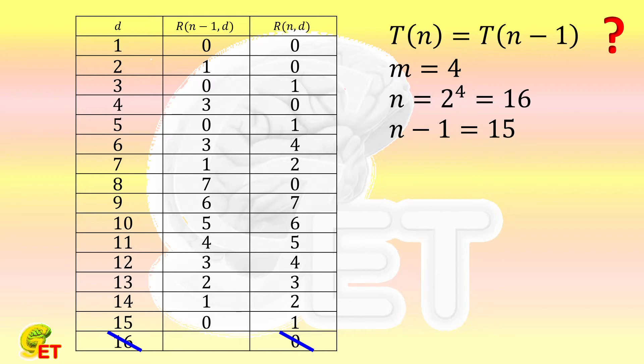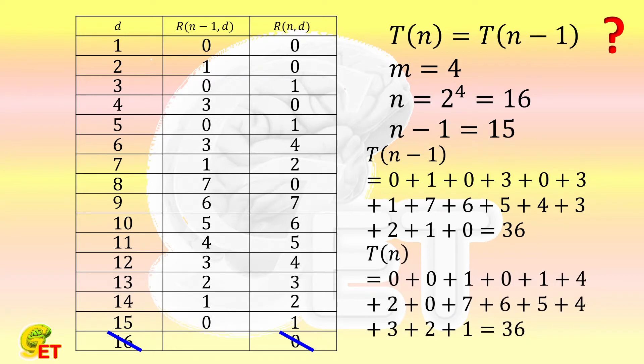Now, we add up the remainders of the dividend of 15. T(n-1) equals 36. And then add up the remainders of the dividend of 16. T(n) is also equal to 36. They are indeed equal.